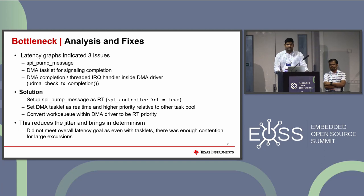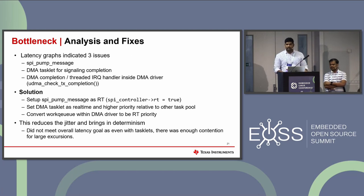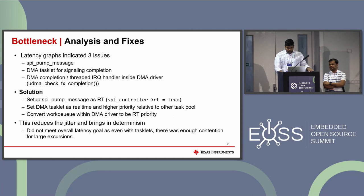What we did was tune the priorities: make the SPI controller work queue real-time priority, make the DMA tasklets real-time and higher priority, and convert the work queue within the DMA driver to real-time priority. Even though this reduced jitter and brought in a slight level of determinism, we still had deferred tasklets and non-RT code in the path where we expected real-time performance. The best thing to do would be to eliminate these non-RT parts and deferred tasklets entirely.